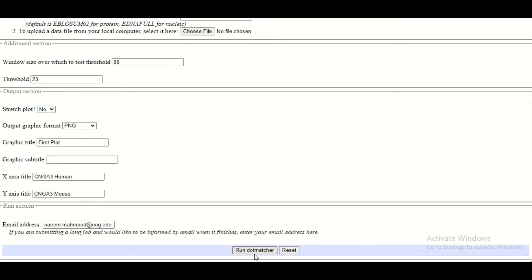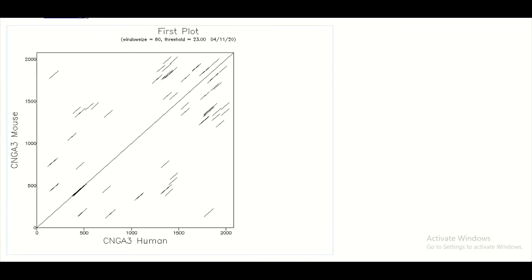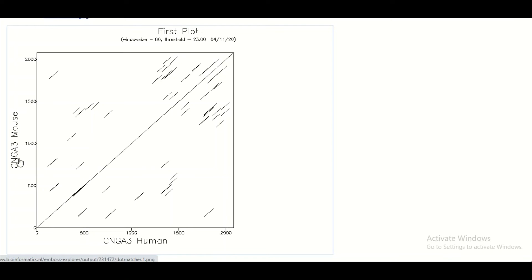So we will run this dot matcher once again, and this time the dot matcher gives a pretty nice result. There is one central diagonal line which is very obvious now, letting me know that more or less both sequences are the same. But there are local similarities as well, and these local similarities are apparent here with the small parallel diagonal lines.